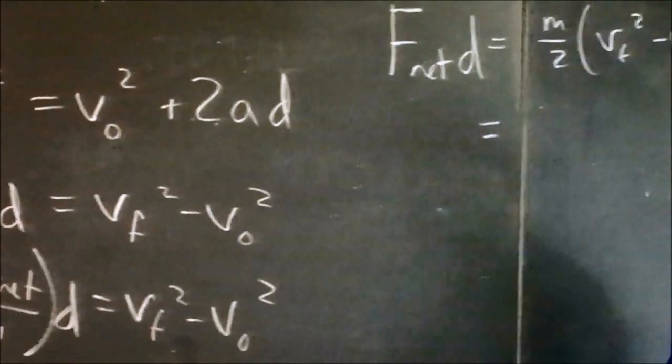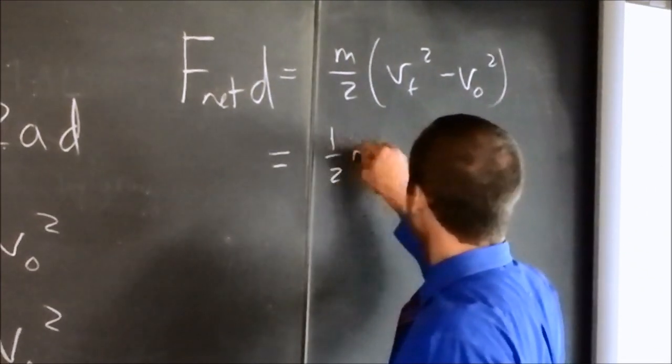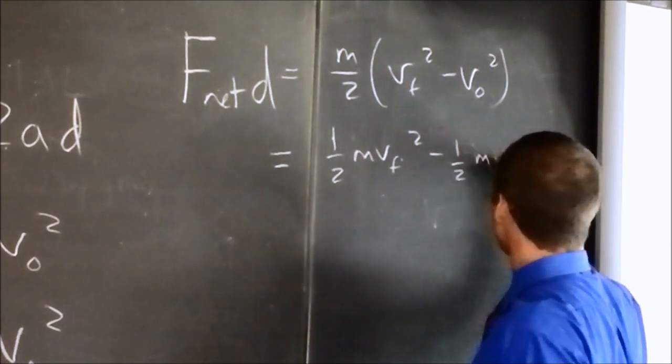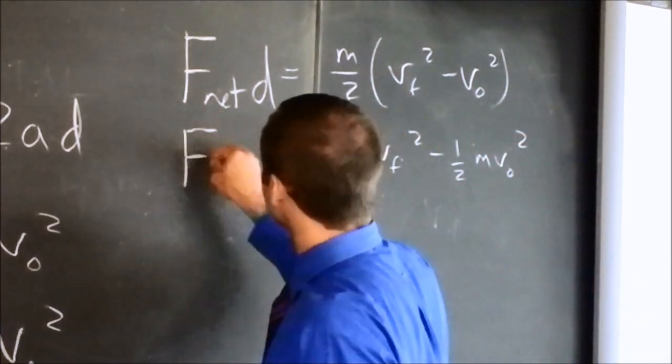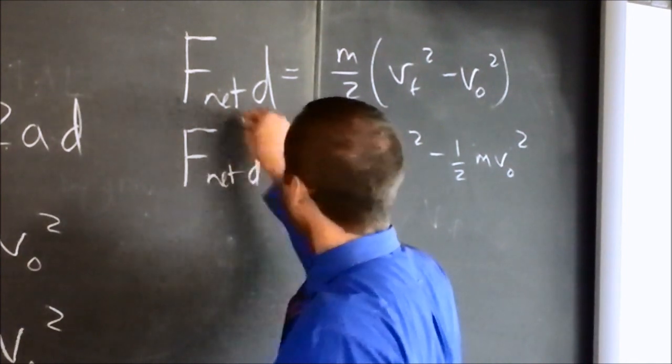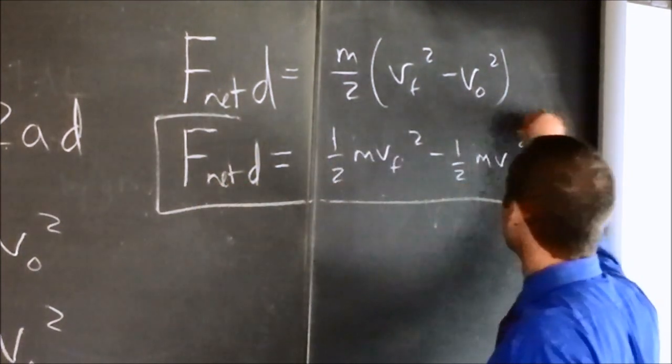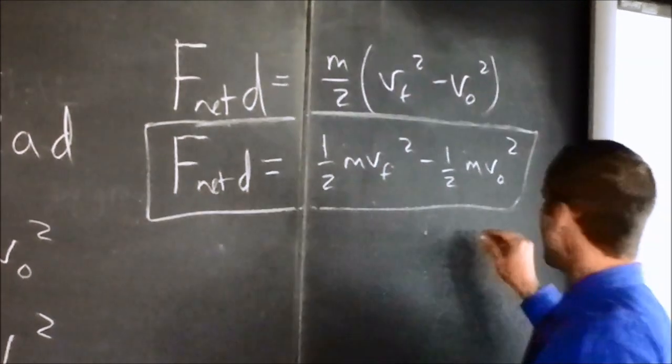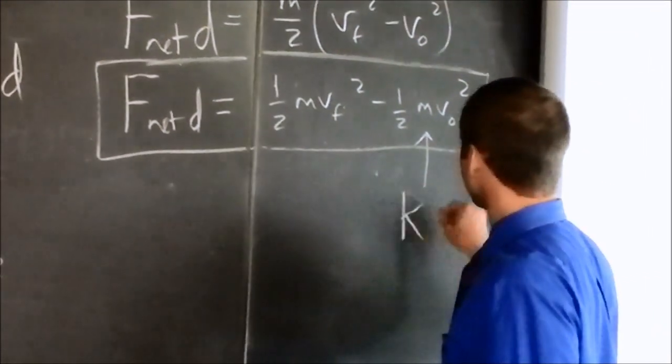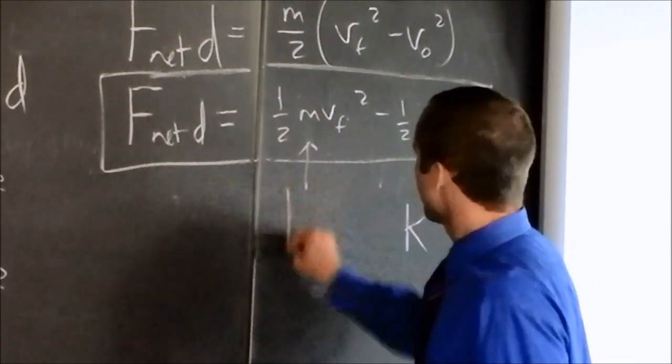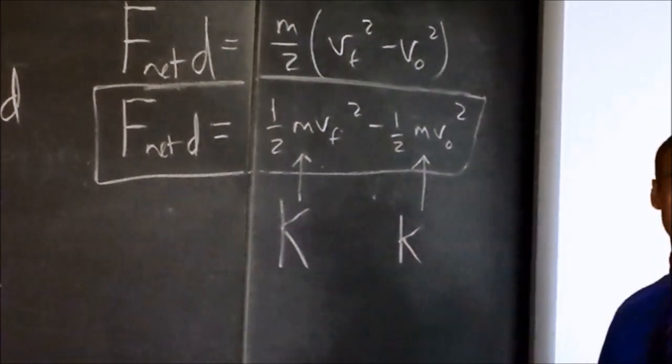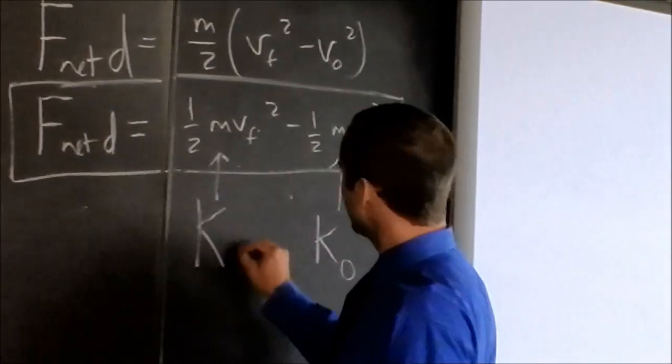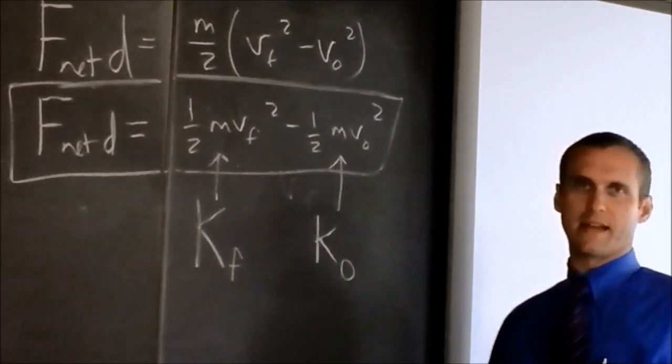See what's coming? I get 1 half m v final squared minus 1 half m v initial squared. This is the work kinetic energy theorem. But that doesn't make any sense unless we define what kinetic energy is. This is kinetic energy. And this is kinetic energy. But they're not just any kinetic energies. This one is the initial kinetic energy of the microscope, and this one is the final kinetic energy of the microscope.